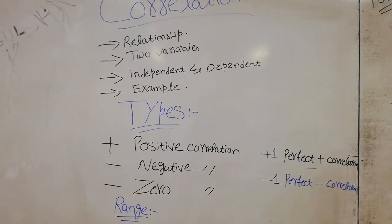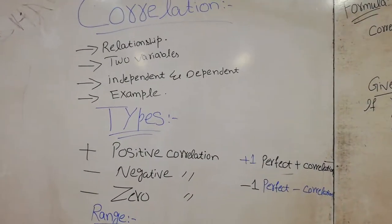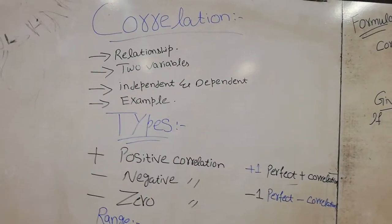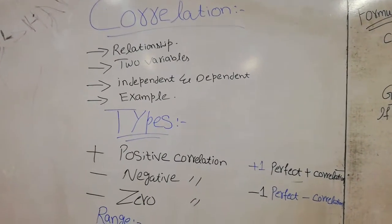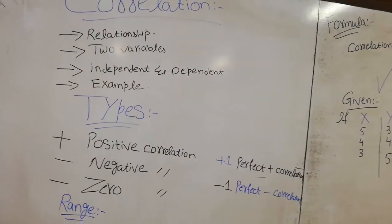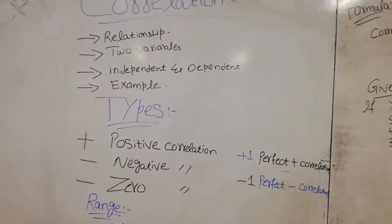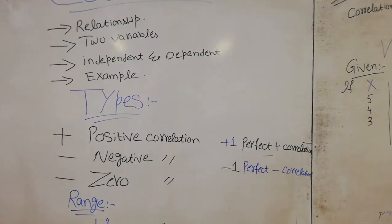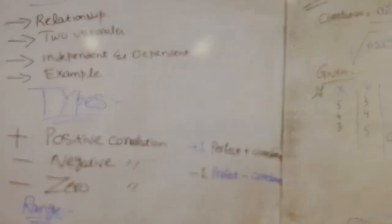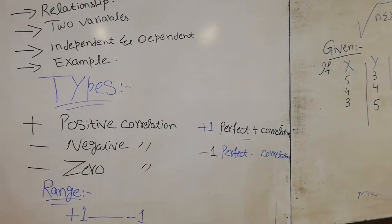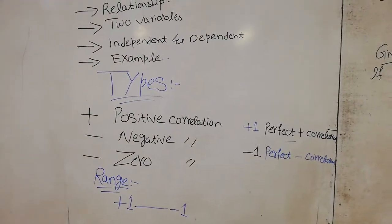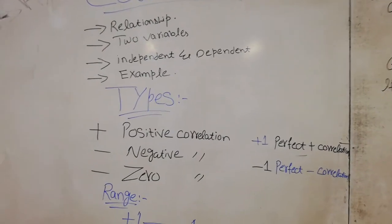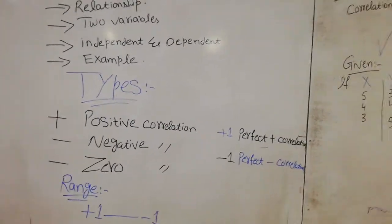The second type of correlation is negative correlation. Negative correlation is when the two variables move in different directions — one moves upward and the other moves downward. If our answer is minus one, then we call it perfect negative correlation. The third type is when the correlation is zero, meaning there is no correlation between the two variables.